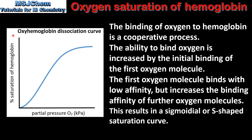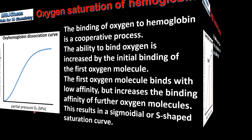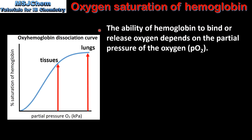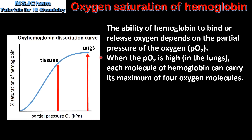Here we can see an oxyhaemoglobin dissociation curve. On the y-axis we have the percentage saturation of haemoglobin, and on the x-axis we have the partial pressure of oxygen. The ability of haemoglobin to bind or release oxygen depends on the partial pressure of oxygen. When the partial pressure of oxygen is high, such as in the lungs, each molecule of haemoglobin can carry its maximum of 4 oxygen molecules.